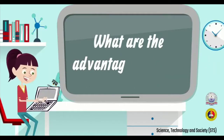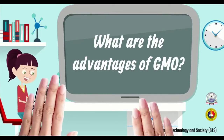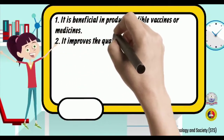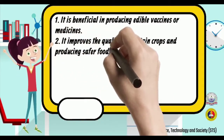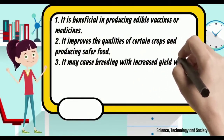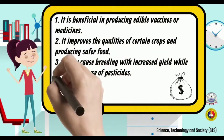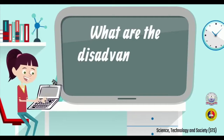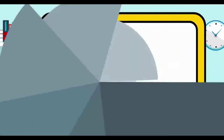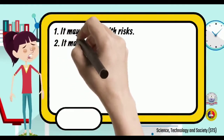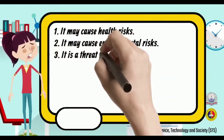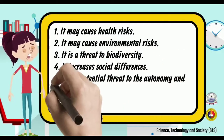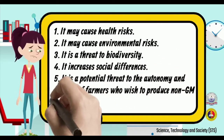The advantages of GMO include producing edible vaccines or medicines, improving the qualities of certain crops and producing safer food, enabling breeding with increased yield while reducing the use of pesticides, and allowing more profit while decreasing food prices. The disadvantages include potential health risks, environmental risks, threats to biodiversity, increased social differences, and a potential threat to the autonomy and welfare of farmers who wish to produce non-genetically modified products.